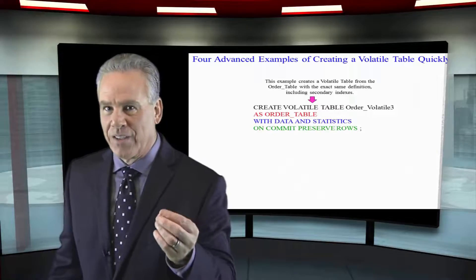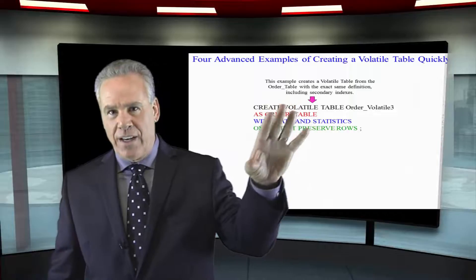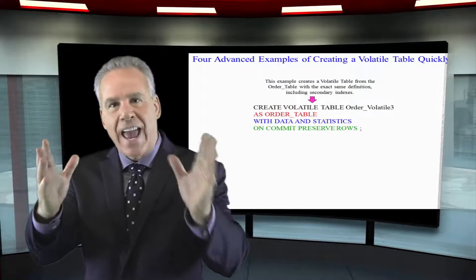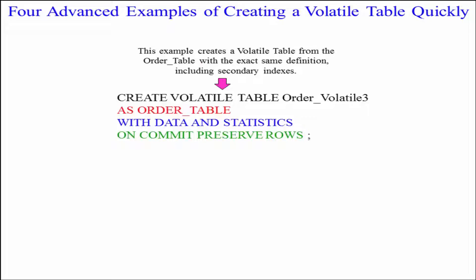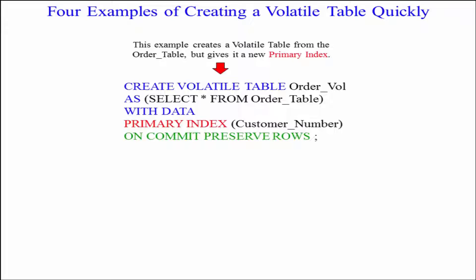You can't change the primary index this way. I prefer the other technique where you open the parentheses and say select asterisk from the table, because I want to change some things or I don't want to copy everything. But here in this last example is the perfect difference: you will either say create volatile table as another table for exact structure, or you open those parens and say select asterisk or select specific columns because you want to make a few changes and don't want things to be exact.